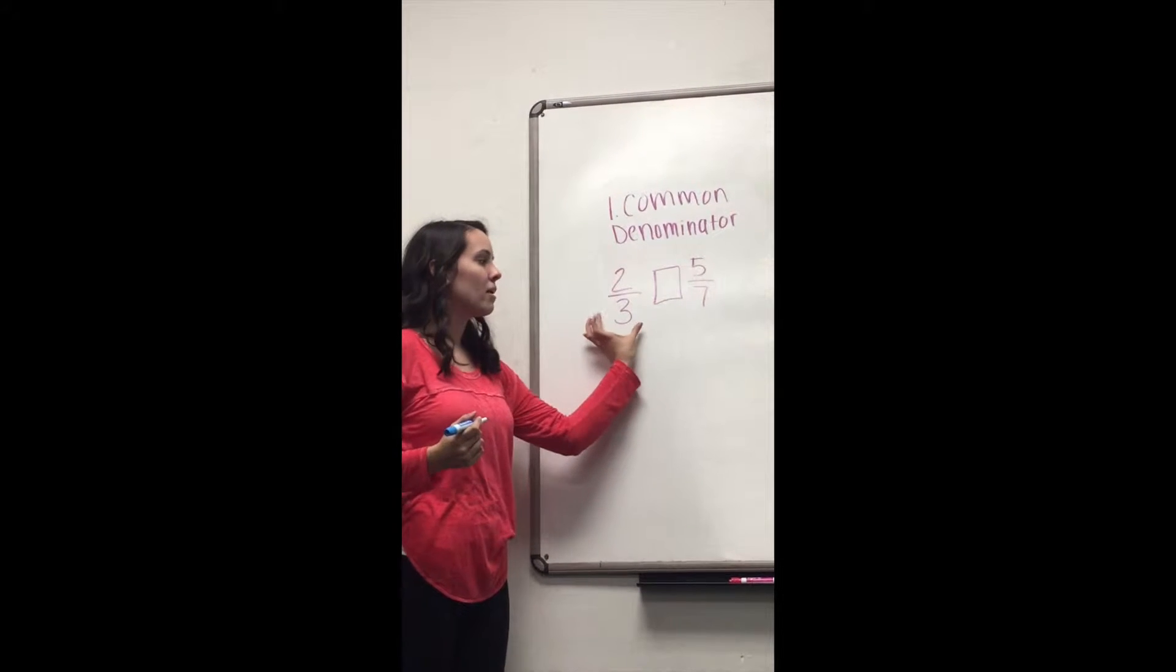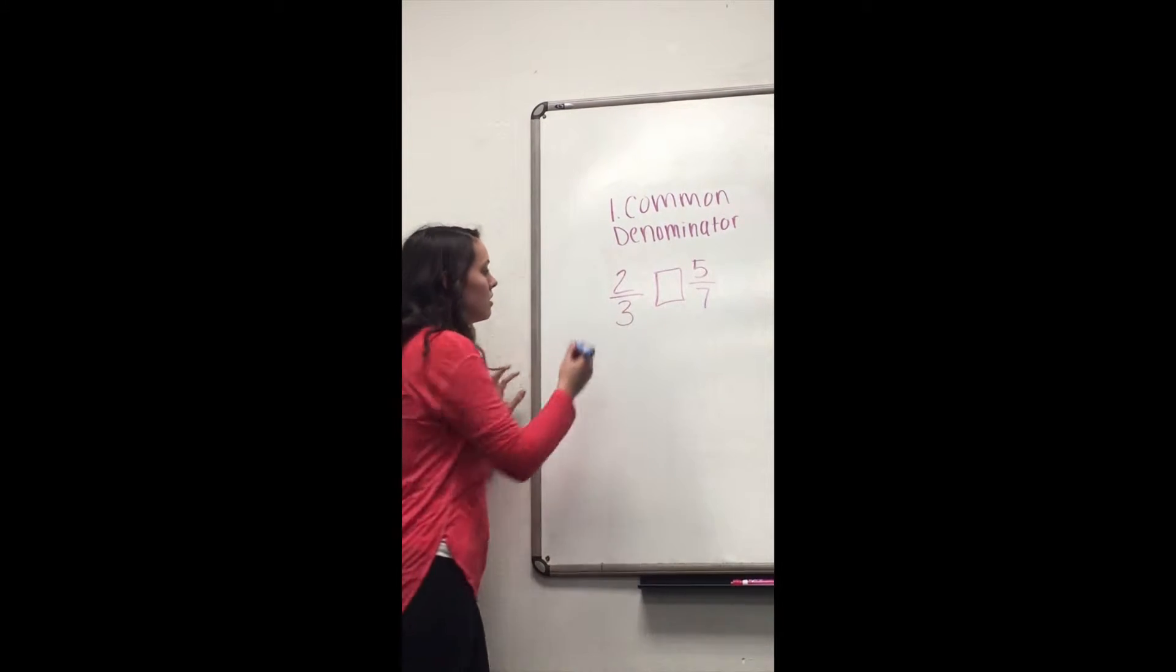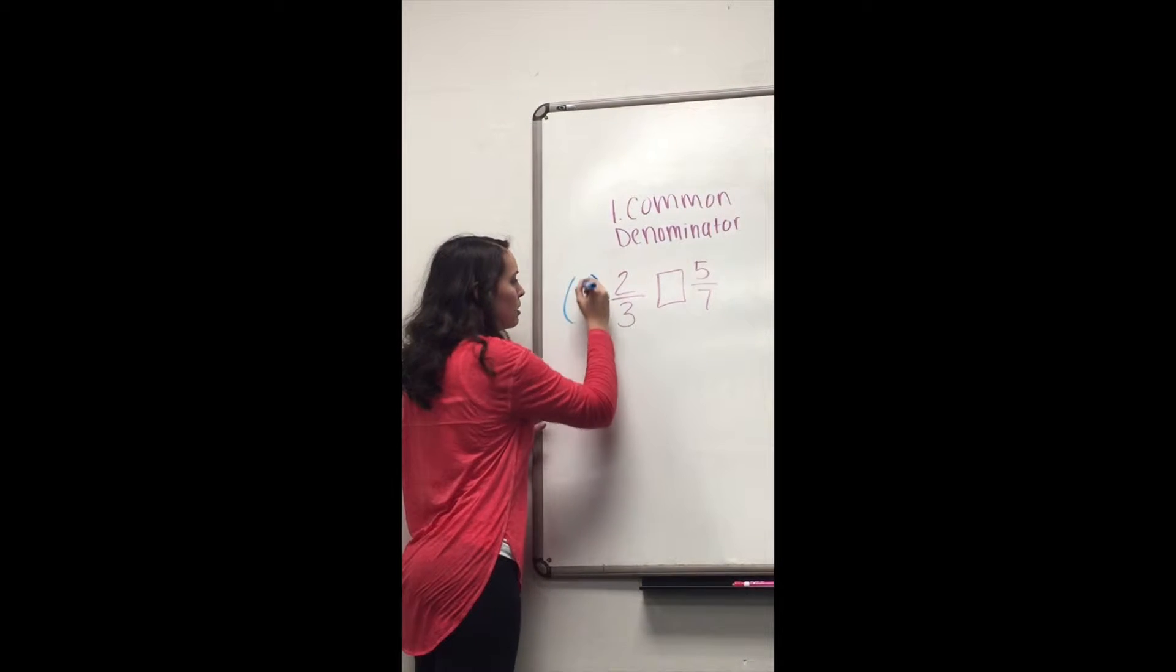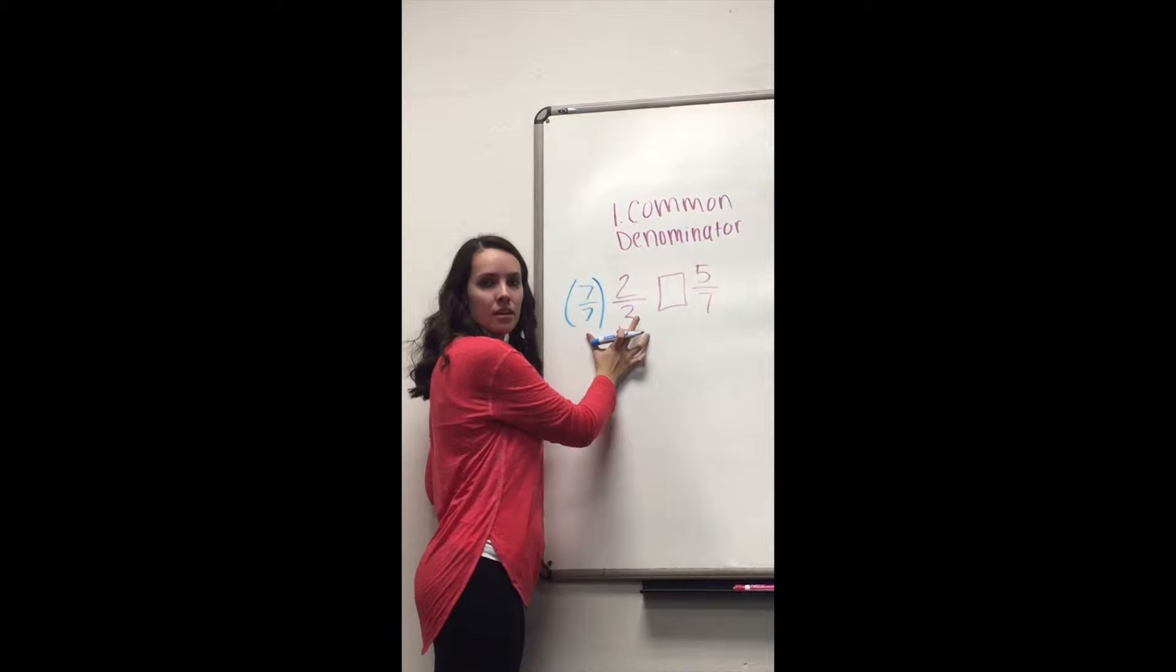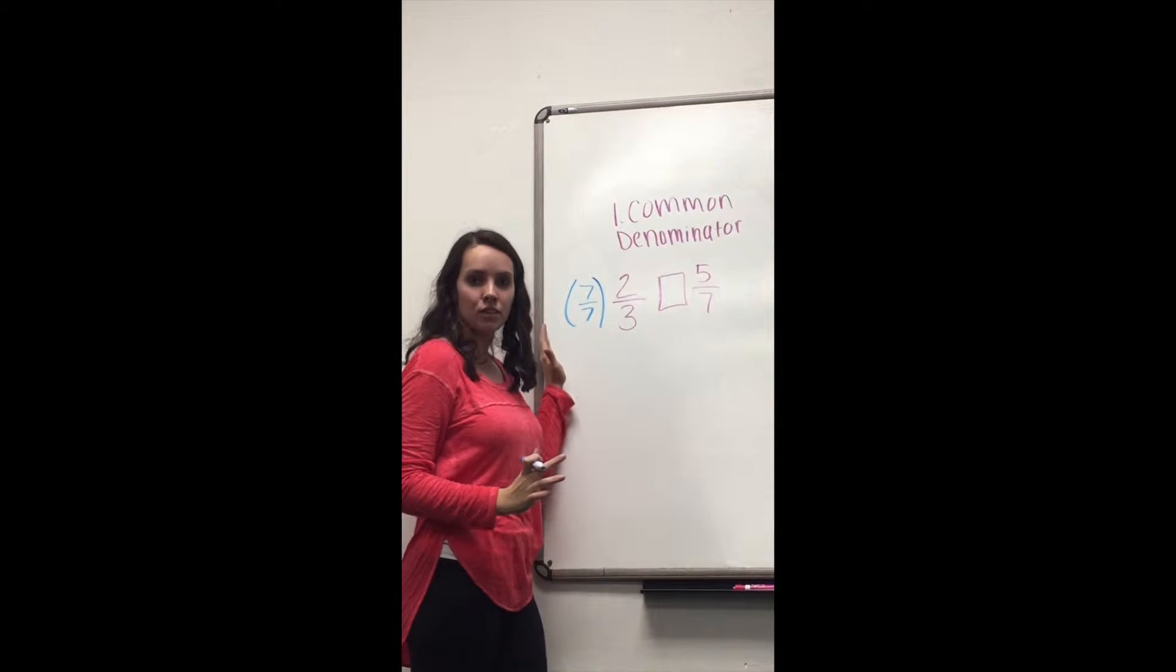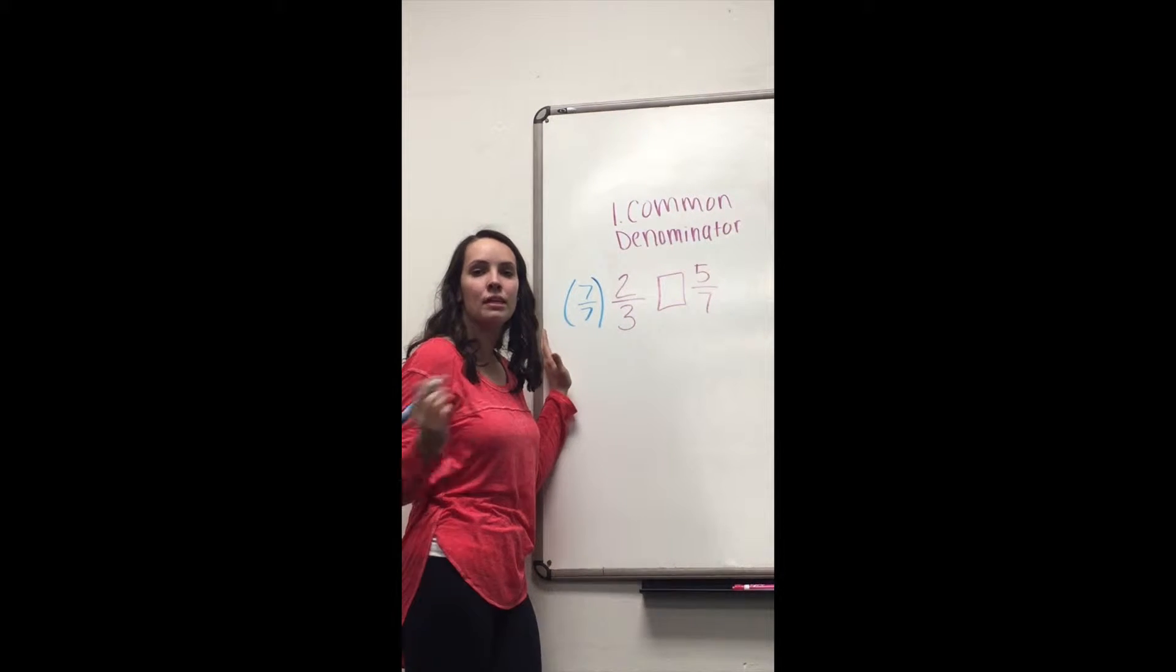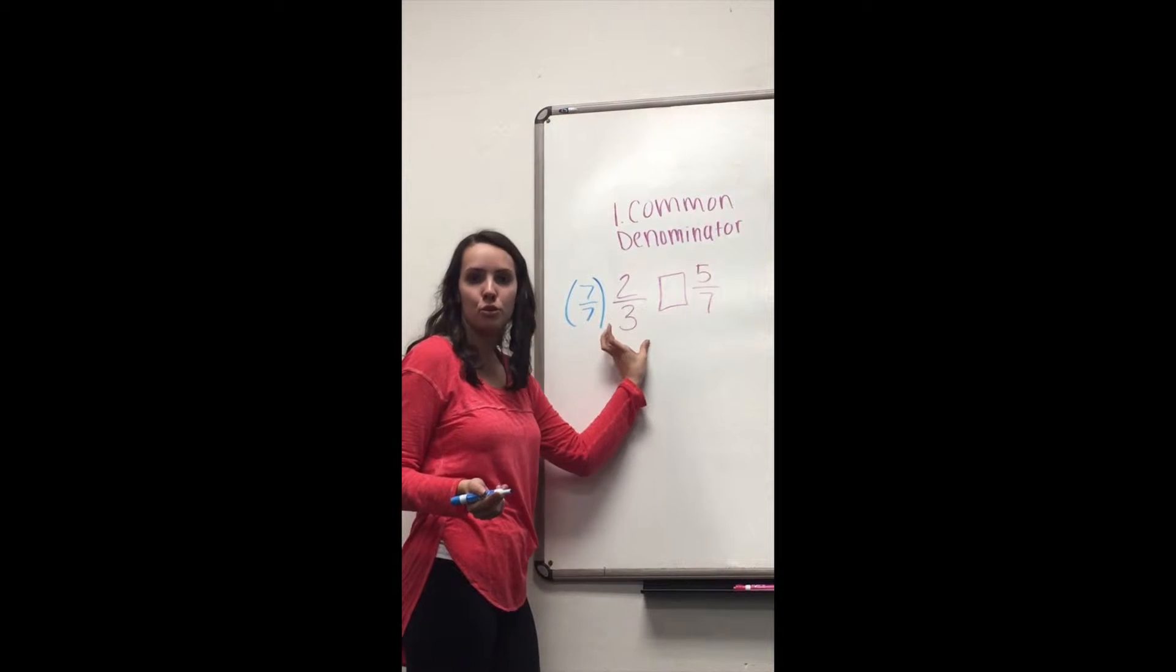So what we need to think about is how we're going to get 3 to be 21. So what we can do is multiply by 7 over 7, since 7 times 3 equals 21. And the reason we multiply by 7 over 7 is because 7 over 7 equals 1, so that does not change the value of 2 thirds. We don't want to change the value.